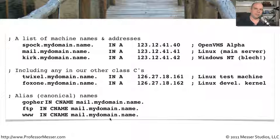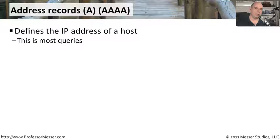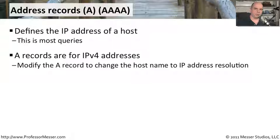An address record is one of the most common types of records in a DNS server. You'll often see them referred to as an A record or an AAAA record — there's a difference between those. This is where most of the work is going on. If I want to go to www.google.com, there is an A record that takes that web server address and gives me the IP address of that web server. A records are for IPv4 addresses — the dotted decimal addresses we're accustomed to seeing. So when we type in www.google.com, it's an A record providing the IPv4 address back for us.